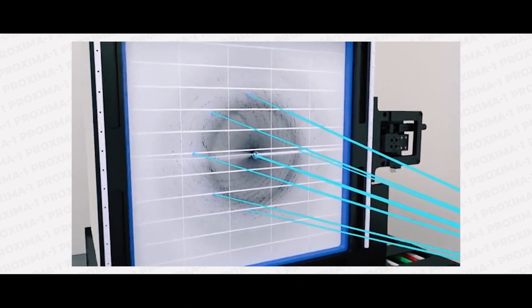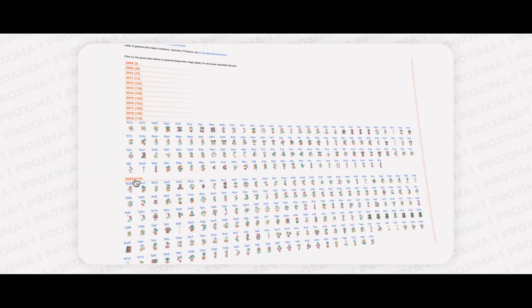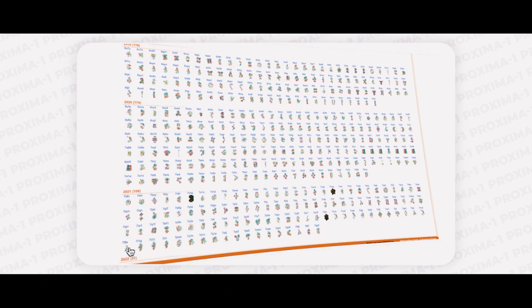The beamline is available to academic and industrial users since 2008, during which time over 1,600 protein structures have been resolved.